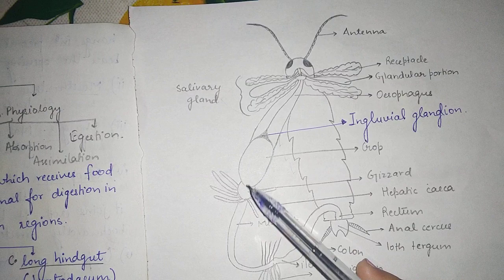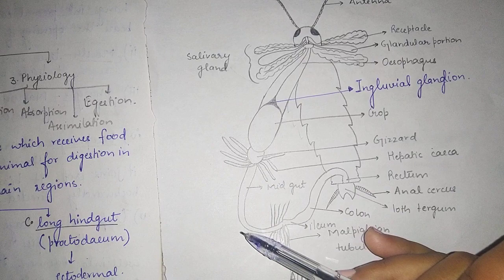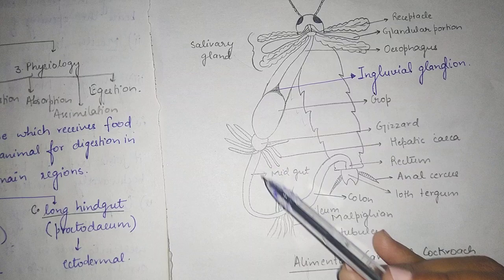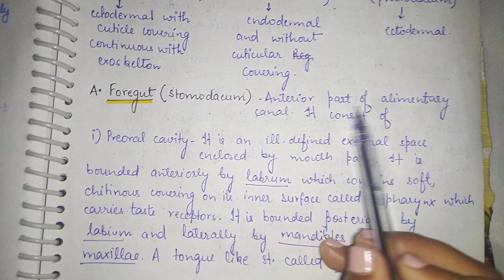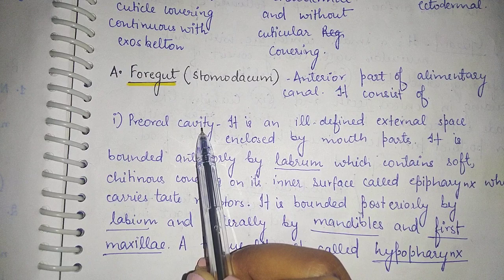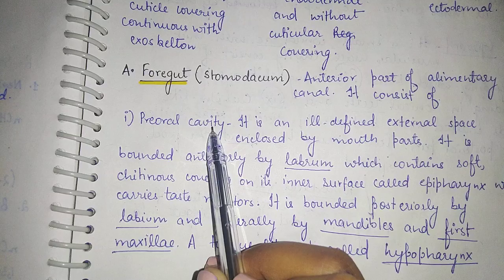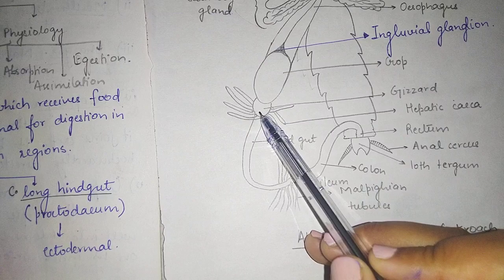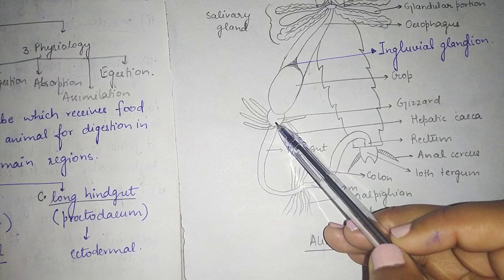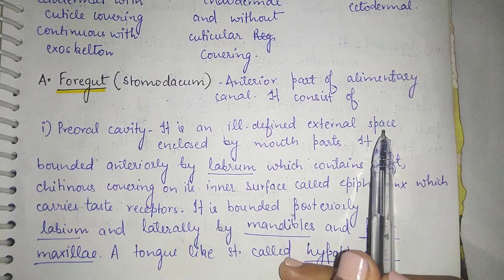Starting with the foregut, also called stomodeum — from the diagram we can see the foregut region, then the midgut, and then the hindgut region. The foregut is the anterior part of the alimentary canal and consists of the pre-oral cavity, mouth, pharynx, esophagus, crop, and gizzard. The foregut extends up to the gizzard.